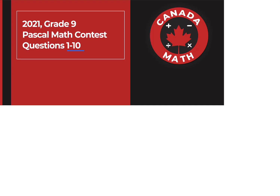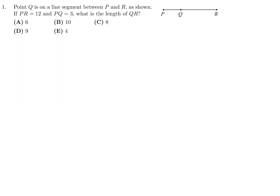Questions 1 through 10 on the 2021 Grade 9 Pascal Math Contest. Point Q is on a line segment between P and R. PR is 12 and PQ is 3. The whole segment is 12, from P to Q is 3, so QR is 12 minus 3, which is 9. Number 1, the answer is D.